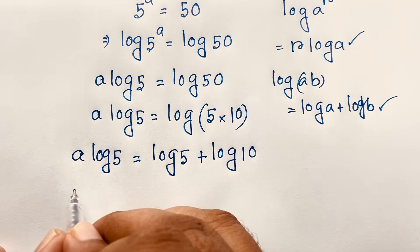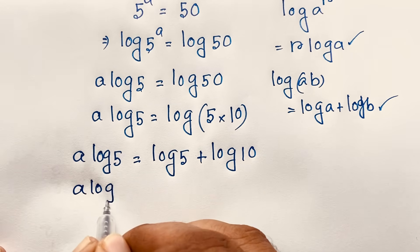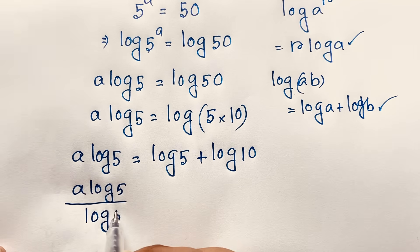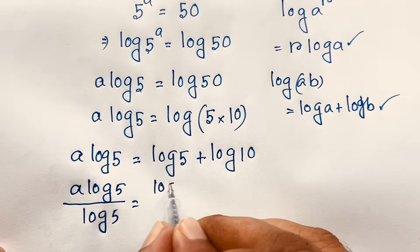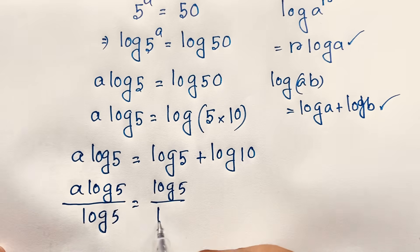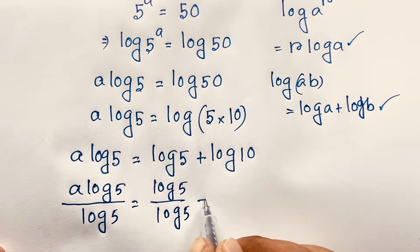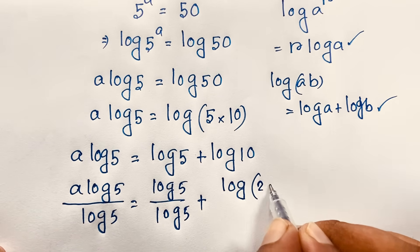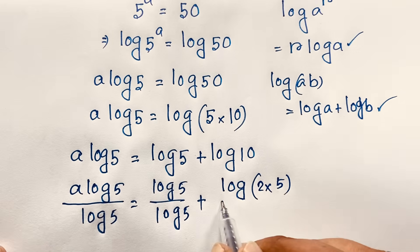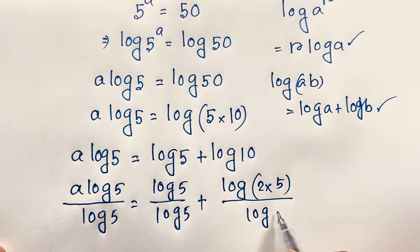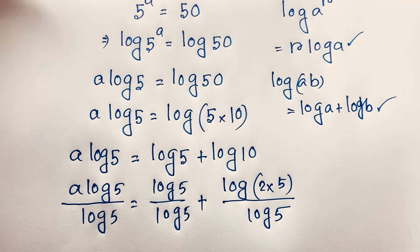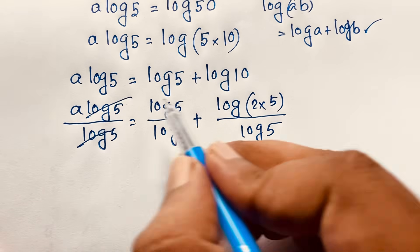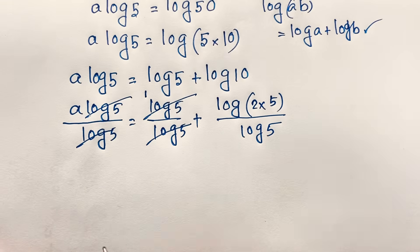It will be a times log 5 is equal to log 5 plus log 10. Now I divide both sides by log 5. So a times log 5 divided by log 5 equals log 5 over log 5 plus log 10 over log 5. Log 5 over log 5 cancels out and it will be 1.